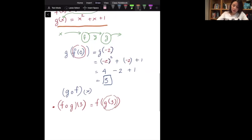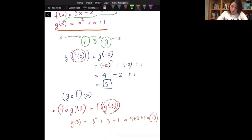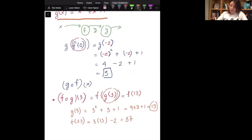So what is g of three? So g of three is equal to three squared plus three plus one, which is nine plus three plus one, which is 13. And now I'm going to use this 13 right here and plug into f. So let me rewrite it here. This is equal to f of 13 now. So f of 13 is equal to 3 times 13 minus 2. 3 times 13, which is 39 minus 2, which is 37. So f composite g of three is equal to 37.